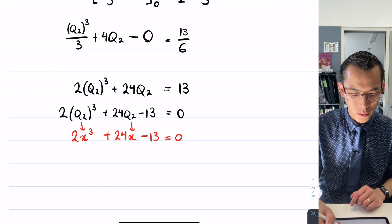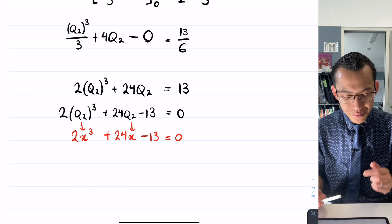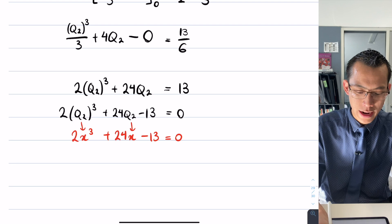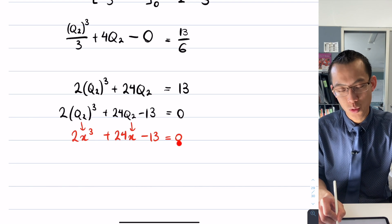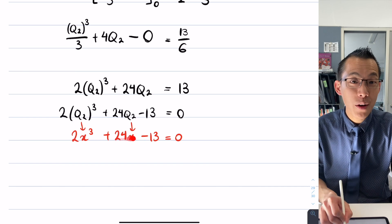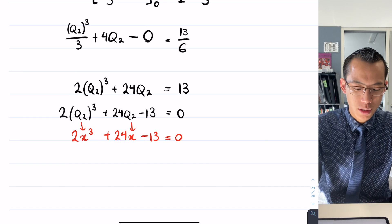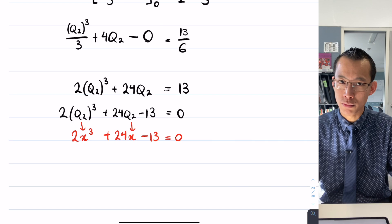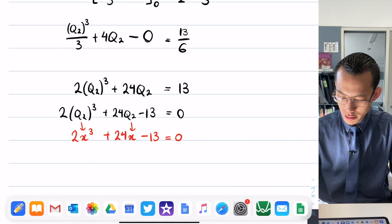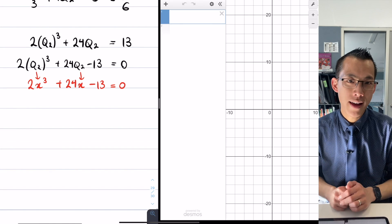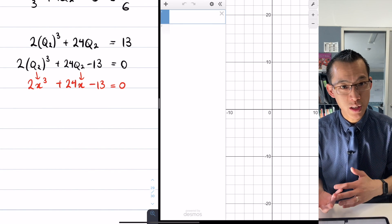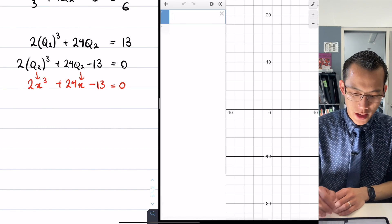Essentially what I'm trying to do here is I'm trying to solve the equation 2x³ + 24x - 13 = 0. Technology can help me with this. This is a graph and I want to find where does that graph equal 0—in other words, where is the x-intercept. For me, my go-to is Desmos.